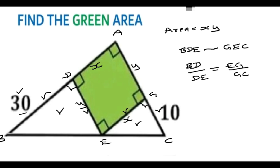If you substitute, BD is given to be 30, so we have 30 over DE, which is Y. 30 over Y equals EG, which is X, over GC, which is given to be 10, so that's X over 10. If you cross multiply, you get 30 times 10 equals X times Y.